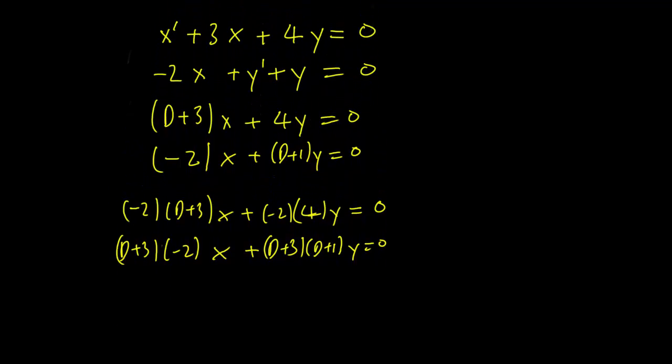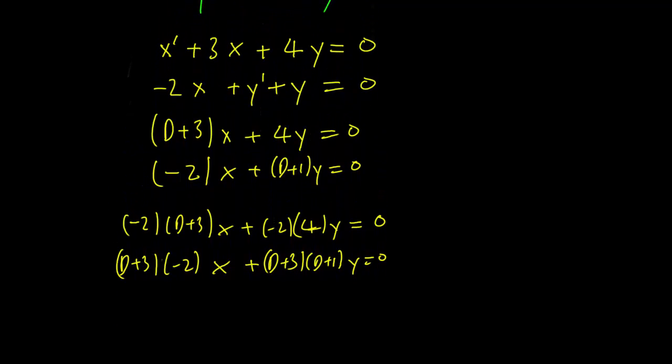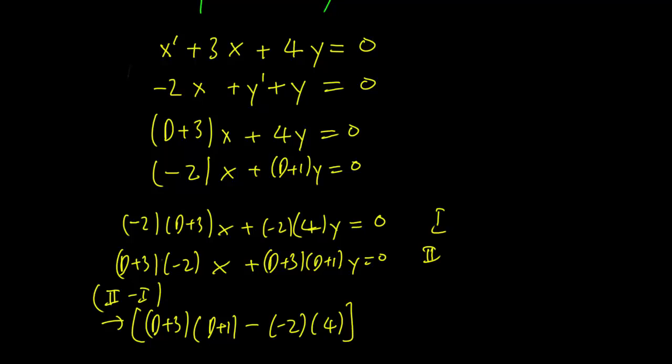It's clear that if we subtract the second equation from the first, we get something nice. So let's call this equation 2 and this equation 1. 2 minus 1 gets us D plus 3 times D plus 1 minus minus 2 times 4, all times y equals 0.